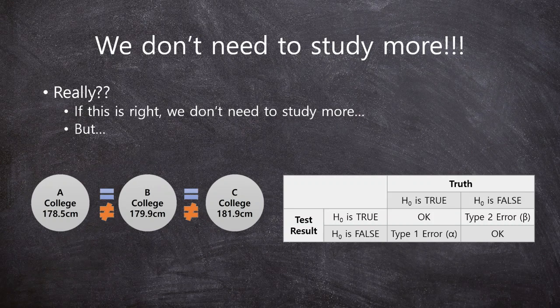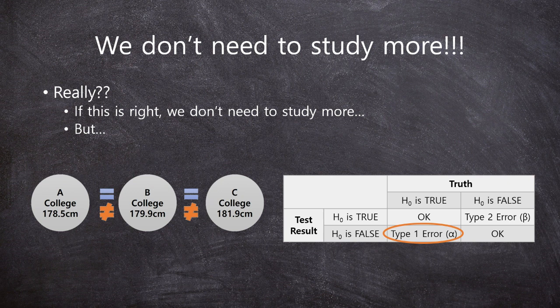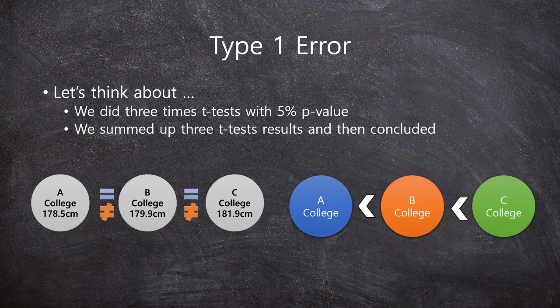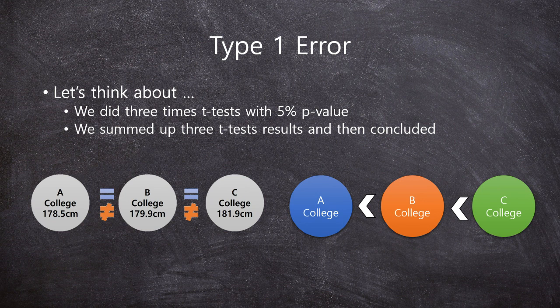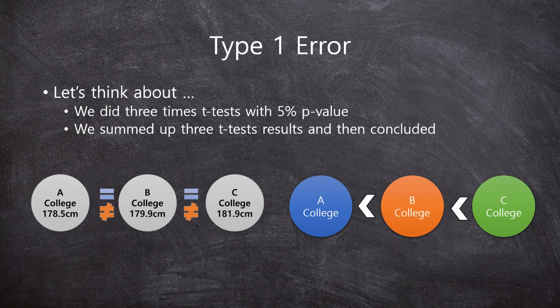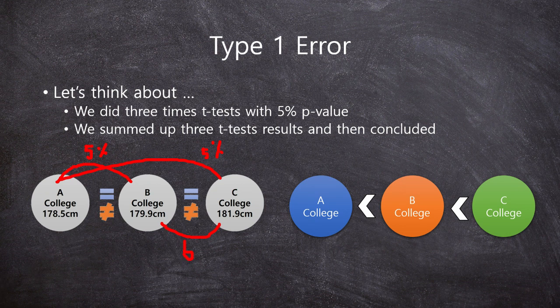In the multiple t-test, there is a problem of Type 1 error. Why? Let's check the Type 1 error in the multiple t-test. Let's think about the situation. We did 3 times t-test with 5% p-value.